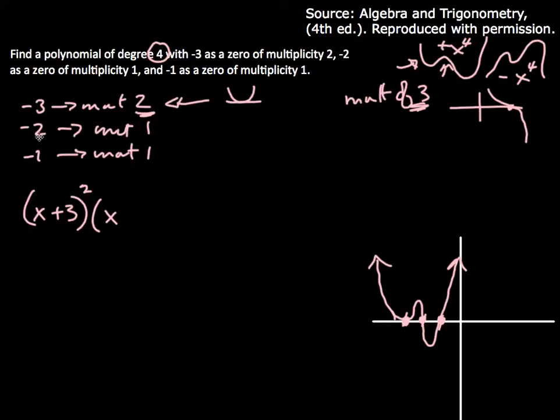Also I have an x-intercept of minus 2, so my factor is x plus 2. And x-intercept minus 1, that gives me a factor of x plus 1. So I could probably just say, hey, there's my polynomial, I'm done.